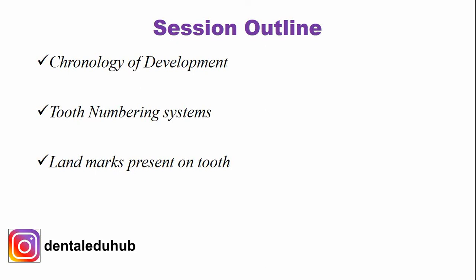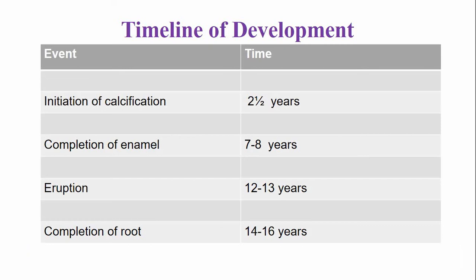The timeline of development of the maxillary second molar: calcification of this tooth begins at the age of two and a half years. The enamel is completed by the age of seven to eight years, and this tooth erupts into the oral cavity by the age of 12 to 13 years. Adding approximately two years, the completion of the root is around 14 to 16 years, because when the tooth erupts, only two-thirds of its root is formed — the remaining root forms over the following two to three years.